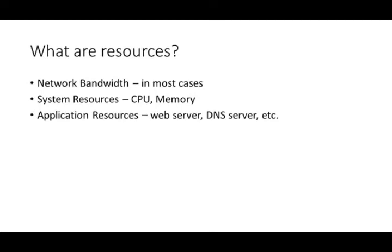Resources include network bandwidth — in most cases large denial of service attacks target the availability of systems. In cloud security, for example, denial of service attacks look at where the most bandwidth is going, to block access to services like Netflix, PlayStation, or Xbox. System resources could be CPU or memory, and application resources could include web servers or DNS servers, which can be overwhelmed by queries.